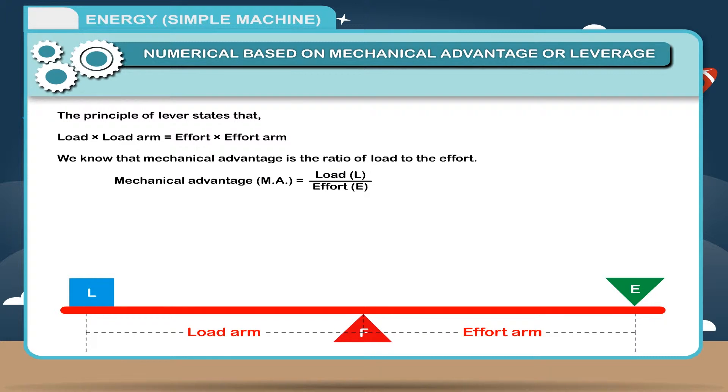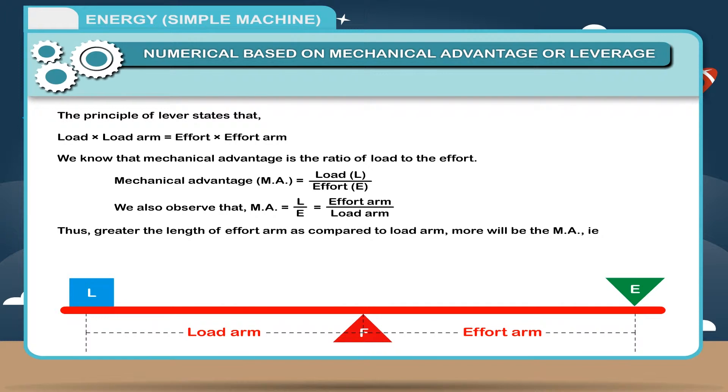Mechanical advantage MA is equal to load L divided by effort E. We also observe that mechanical advantage MA is equal to L upon E is equal to effort arm divided by load arm. Thus, greater the length of effort arm as compared to load arm, more will be the MA. That is, less effort will be required to overcome the load.